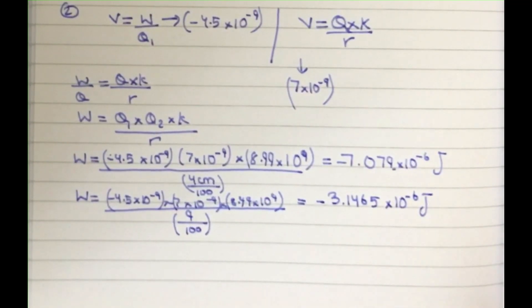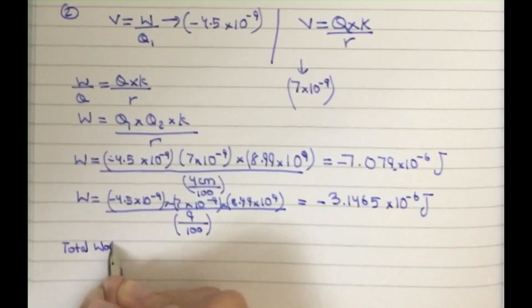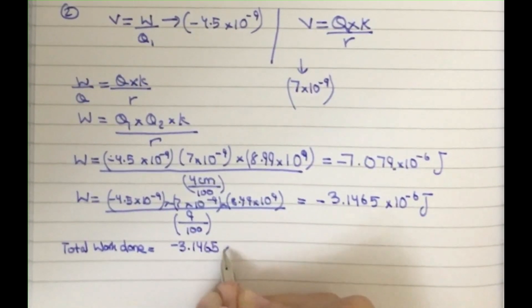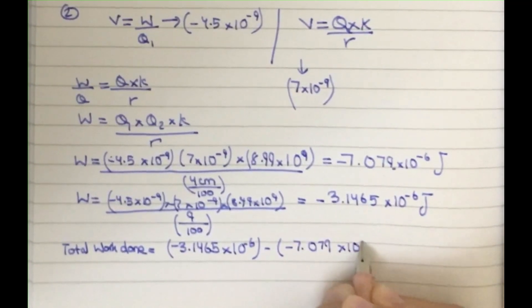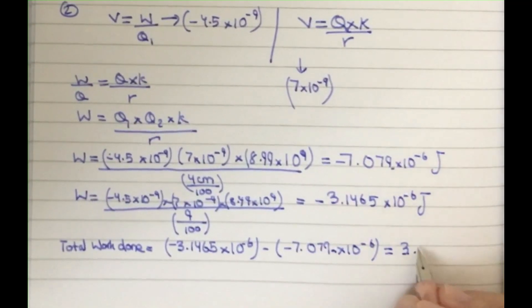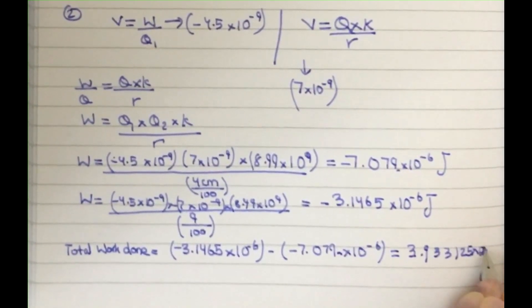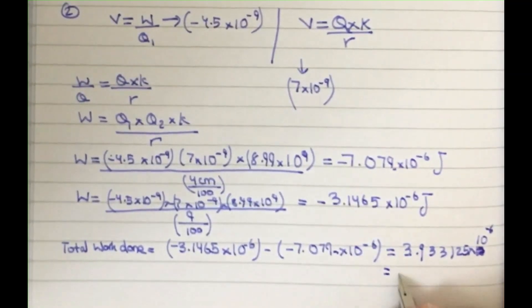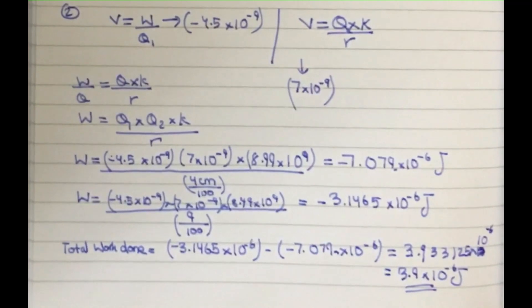Now we take the difference of the two work done values — this represents the work done when the charge was moved from 4 centimeters to 9 centimeters. The total work done equals the 9 centimeter value subtracted from the 4 centimeter value. The answer comes out to 3.9125 times 10 to the power minus 6, and since the question gives one decimal place, the final answer is 3.9 times 10 raised to power minus 6 joules. Remember, the unit for work done is joules.